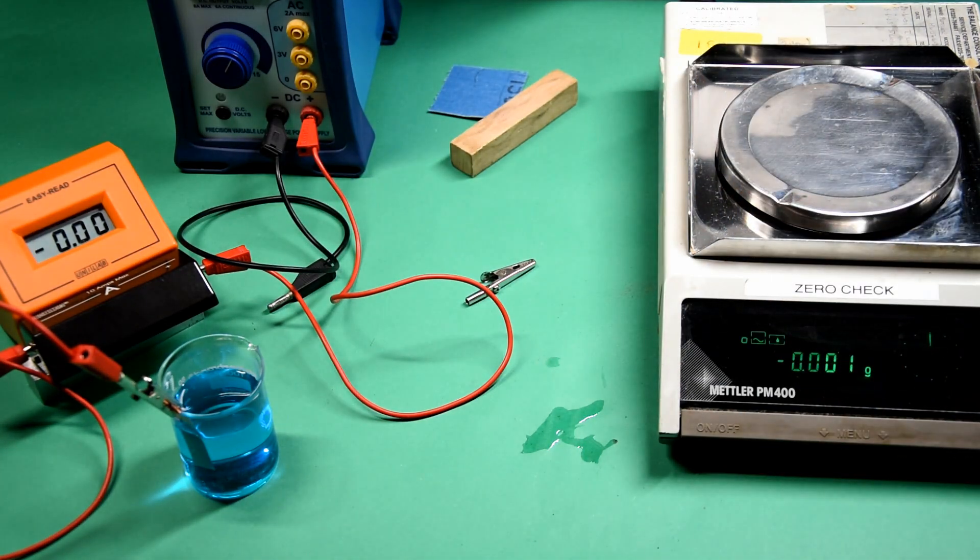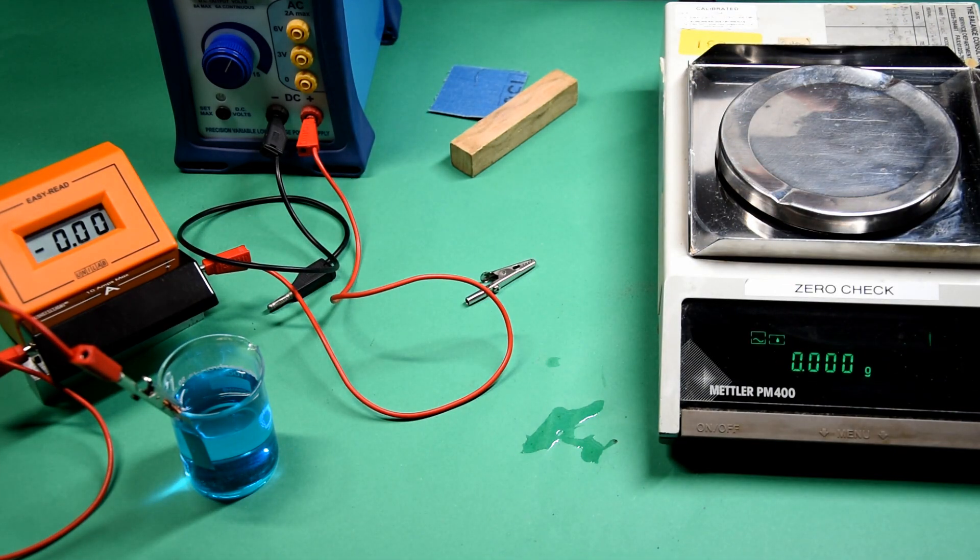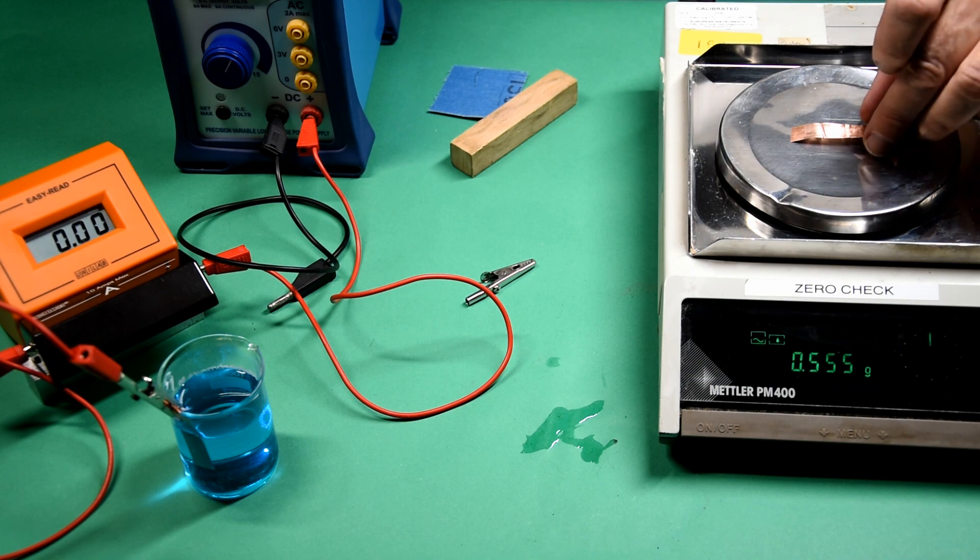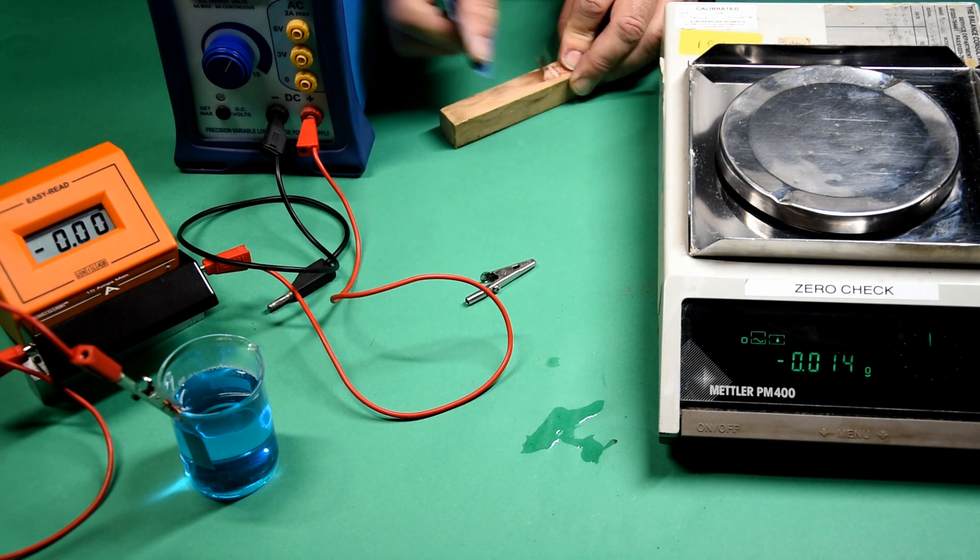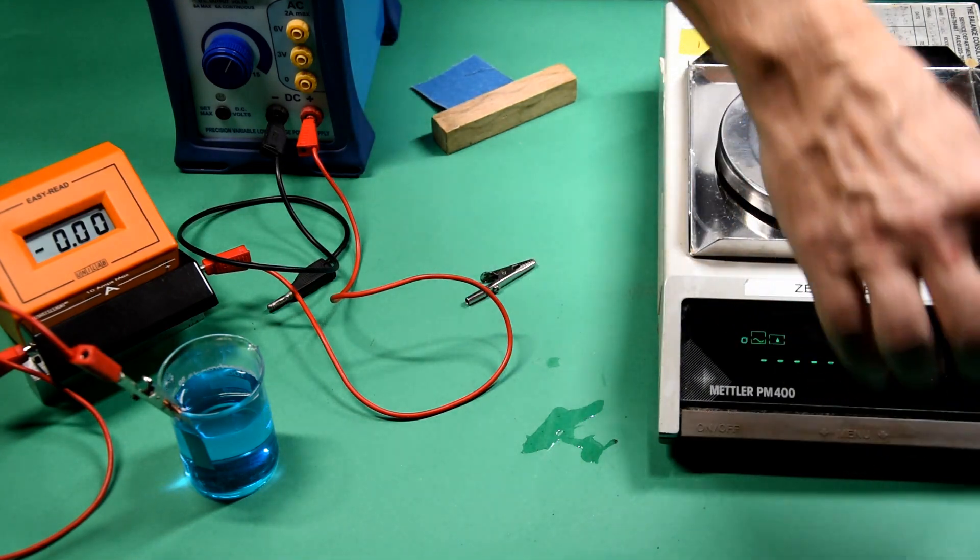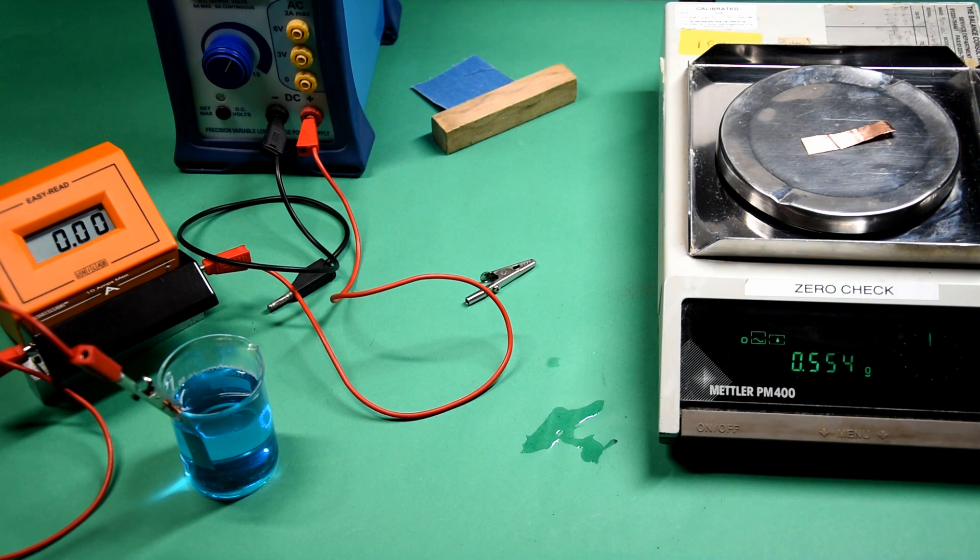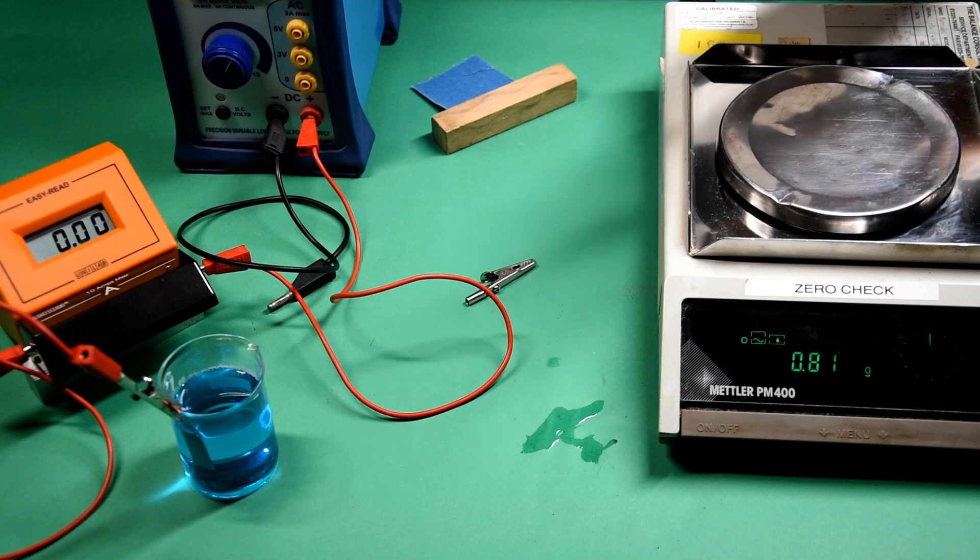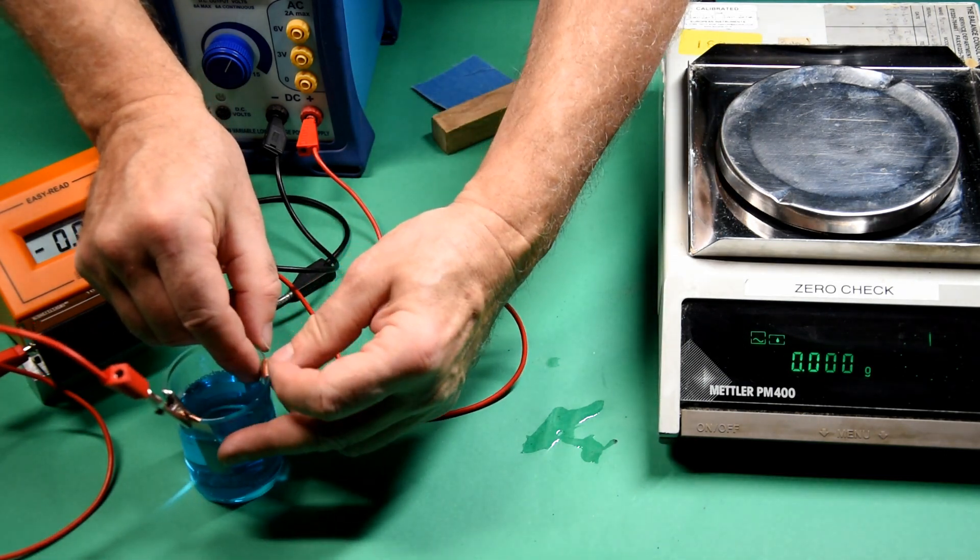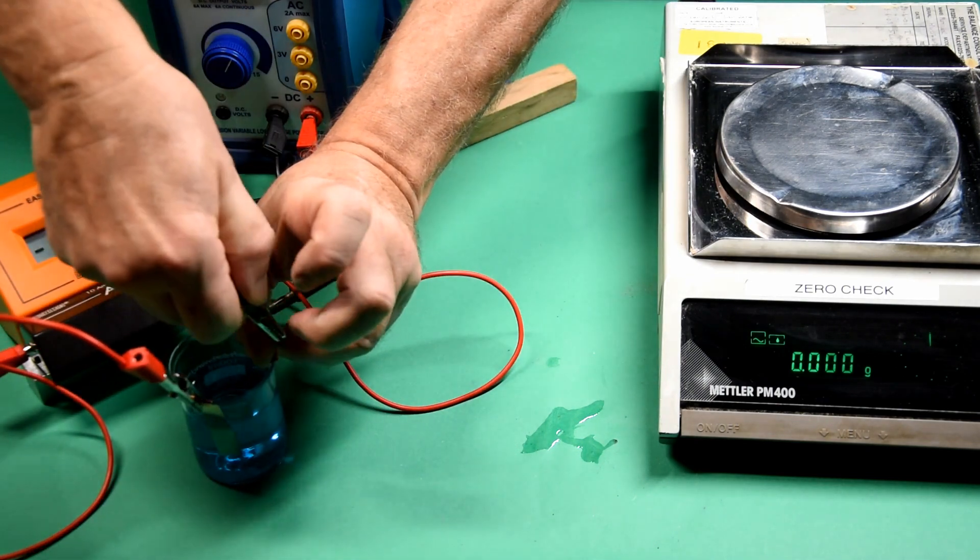The process is repeated for the cathode, remembering to clean it again with emery paper.